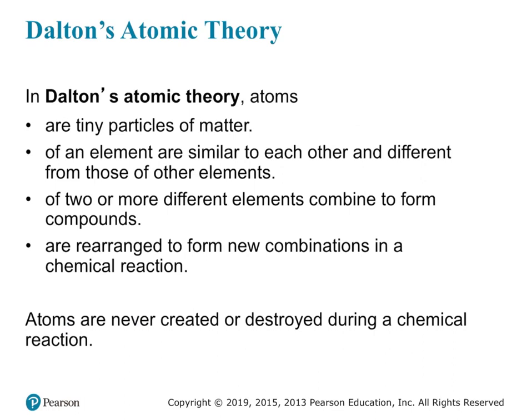Later on in the 1800s, scientist John Dalton came up with the atomic theory, which summarized everything we knew about atoms up to that point. According to Dalton's atomic theory, atoms are tiny particles of matter. Atoms of an element are similar to each other, and they're also different from those of other elements. So if you have an atom of carbon versus an atom of aluminum, they're going to be very different from each other.